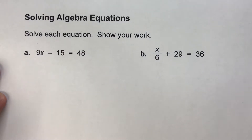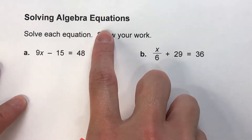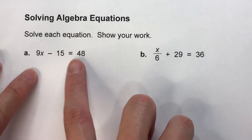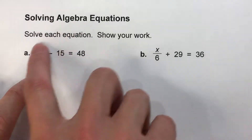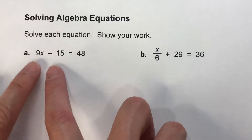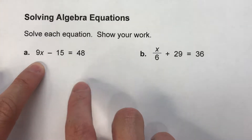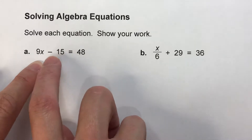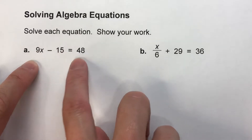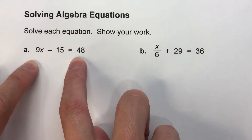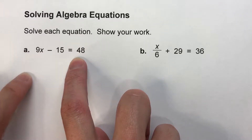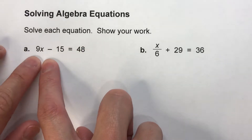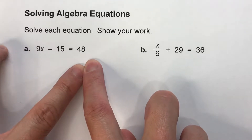Today we are solving algebra equations. The key to solving an algebra equation is to undo the problem to figure out what x is. We're going to undo each piece in the exact opposite order of the order of operations. And what you do to one side of the equal sign, you have to do to the other side to keep it balanced.